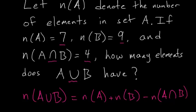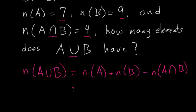In our case, the number of elements in A is 7 plus the number of elements in B which is 9 minus the intersection of the sets. We know they share 4 in common, so minus 4. 7 plus 9 is 16, minus 4 is 12. So 12 is our final answer to this problem.